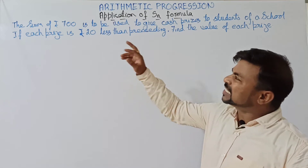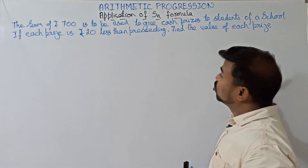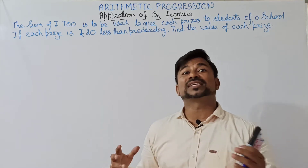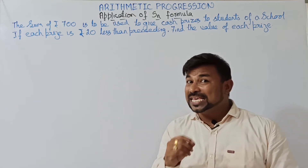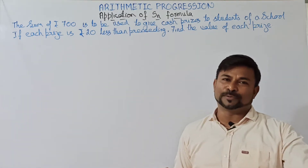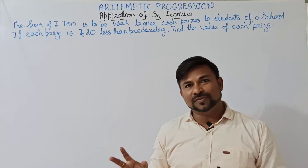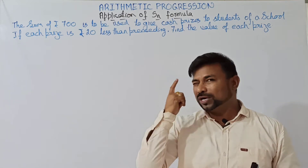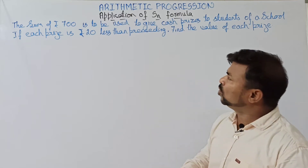So what is the given question here? The sum of 700 rupees is used to give cash prizes to students of a school. The total sum given is 700 rupees as cash prizes. The condition given is that each prize is 20 rupees less than the preceding prize. Preceding means the term which is just before it. Total prizes: seven. Total sum: 700 rupees. The only logic given is that every prize is 20 less than the preceding prize.